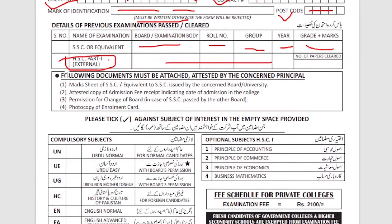Now let's see what documents are required. First, you will need a metric mark sheet — you will need photocopies, usually two photocopies. If additional copies are required, then bring those as well; otherwise two is the standard.